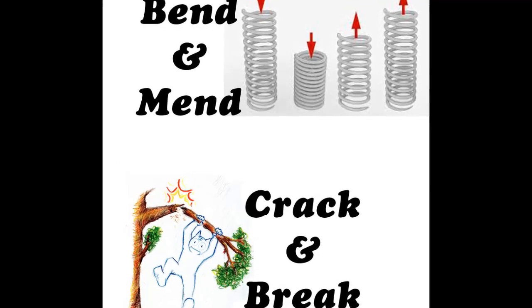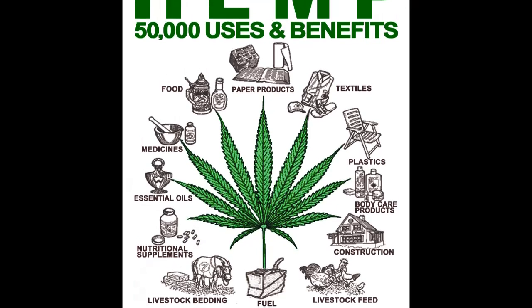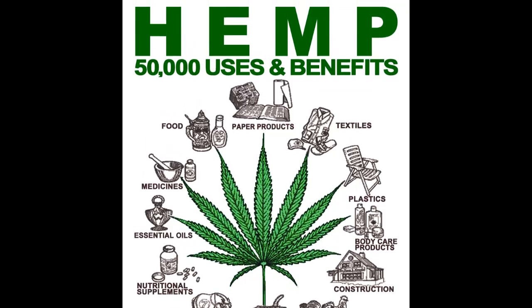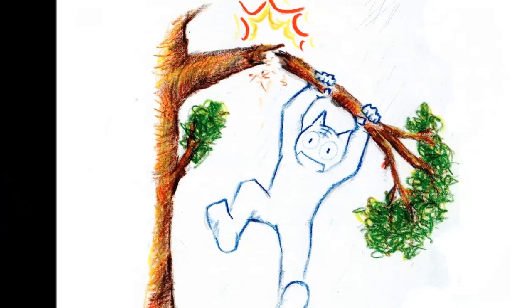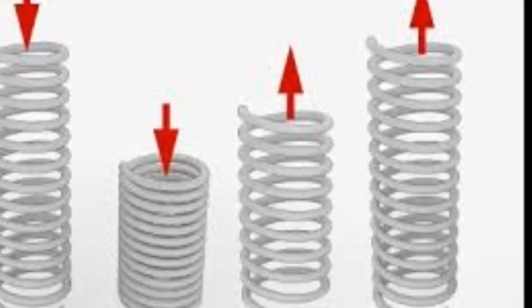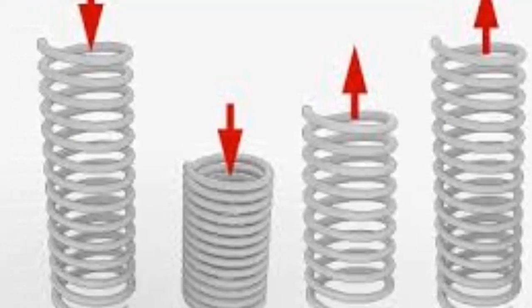The two measurements of strength are crack and break and bend and mend. With these two measurements of strength, we are easily able to understand why hemp is stronger than steel. Hemp can hold almost twice the weight as steel before it cracks and breaks. And hemp can bend and mend almost six times better than steel.